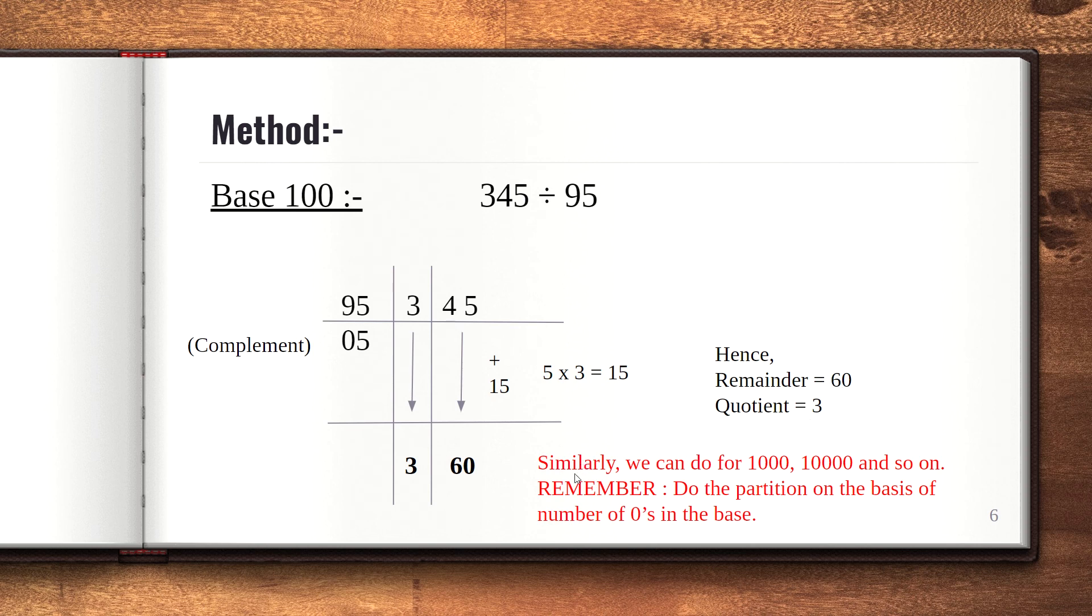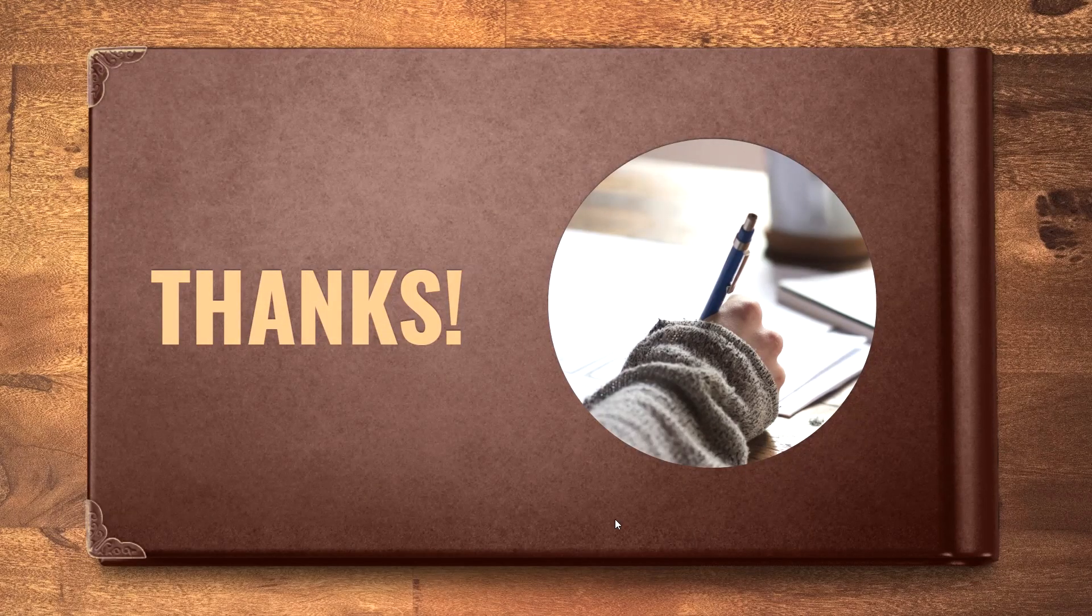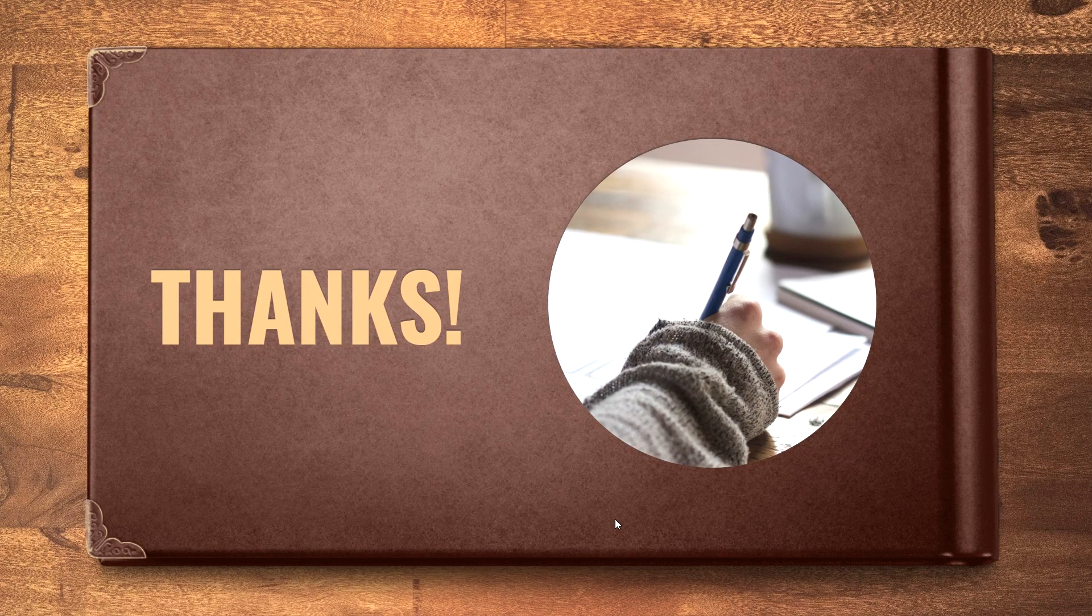One thing you should remember is that we do the partition on the basis of number of zeros in the base, and we can apply this method to other divisors also, like 1000, 10000, and so on. I hope you understand the method. Thank you.